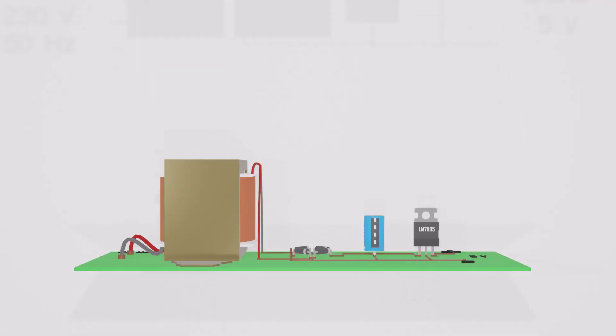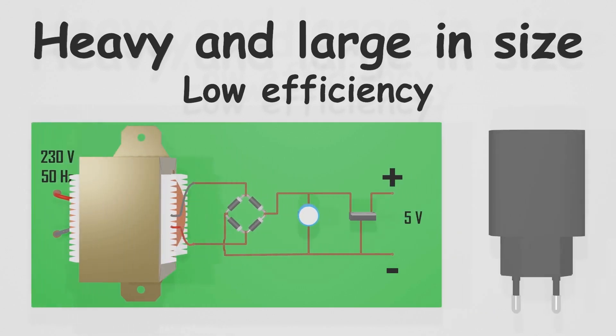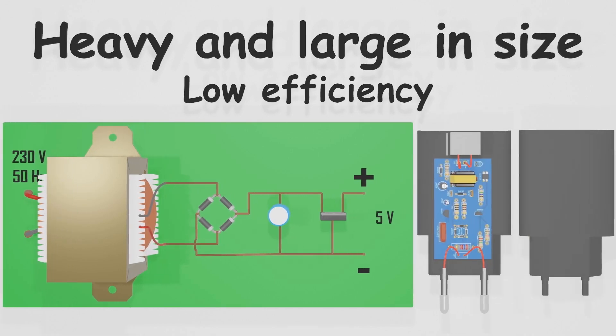But the problem with these kinds of power supplies is, even though they can convert the AC to desired DC, the efficiency is low. It normally wastes a lot of energy as heat, and moreover, they are heavy and large in size. That is why those are unfit for traveling chargers.